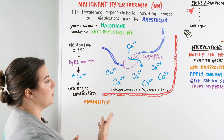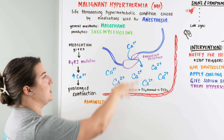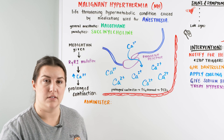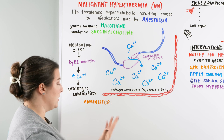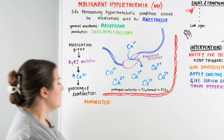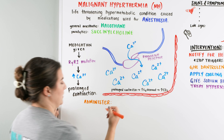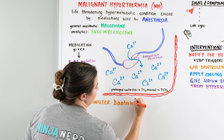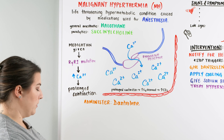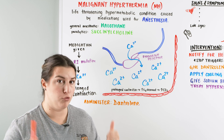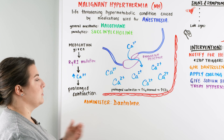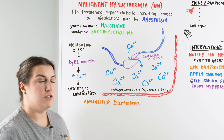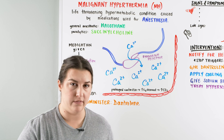We want to think about how to reverse this quickly, because we gave a medication that caused this reaction and it is life-threatening. The biggest thing to administer is dantrolene. On the NCLEX, if a patient in anesthesia suddenly becomes rigid or their temperature shoots up to 105–106, one of the main things you want to administer is dantrolene. So let's talk about the signs and symptoms and other interventions.